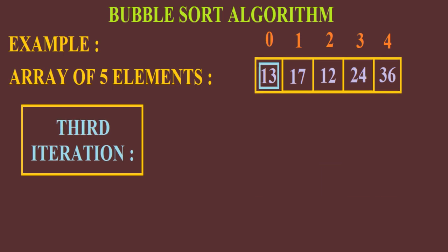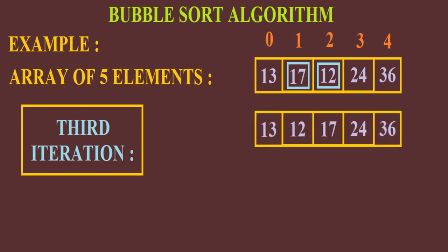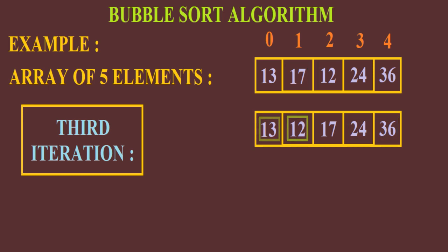In the third iteration, 13 will be compared to 17. They will remain in their original positions since 13 is less than 17. Then 17 will be compared to 24 and they both will remain in their original positions because 17 is less than 24. And 24 and 36 will also remain in their same positions. So after the third iteration, the array will look like this: 13, 12, 17, 24 and 36.